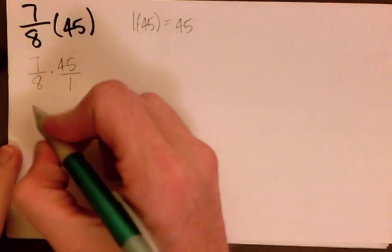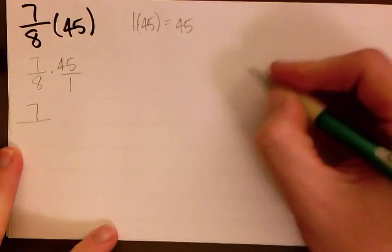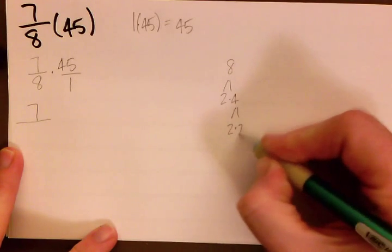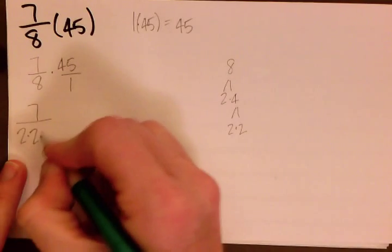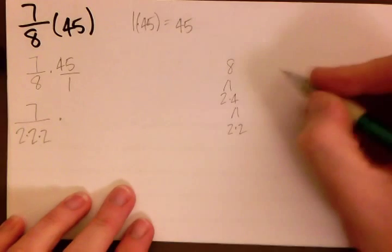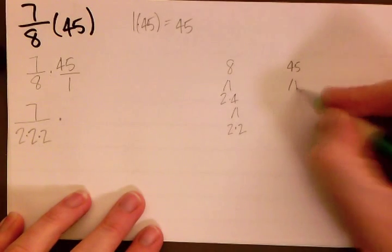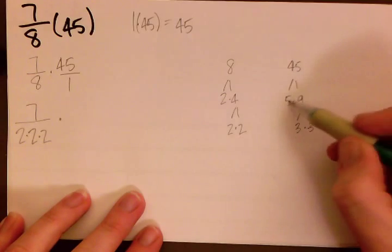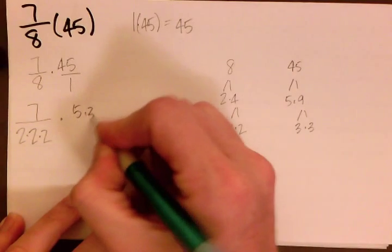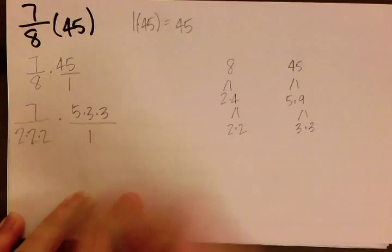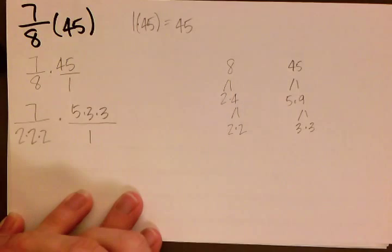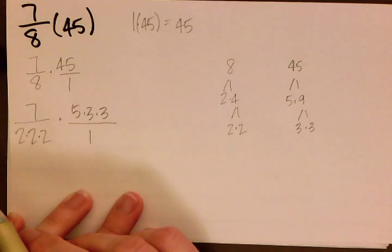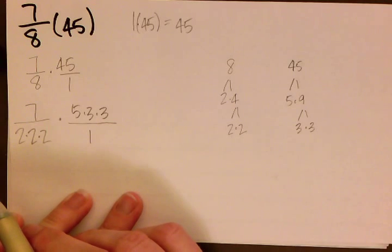7 is a prime number so we just have to leave it as it is. 8 can be factored: 8 is 2 times 4, and 4 is 2 times 2, so 8 is 2 times 2 times 2. And then we have 45 as well: 45 is 5 times 9, and 9 is 3 times 3, so we have 5 times 3 times 3 for 45 over 1. Now we are looking for like terms that we could reduce with, and unfortunately we don't have any in this case. Sometimes we will, but we don't right now.